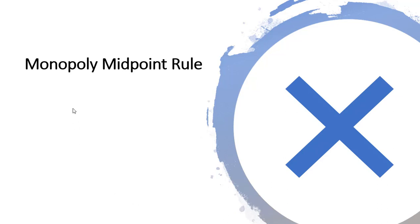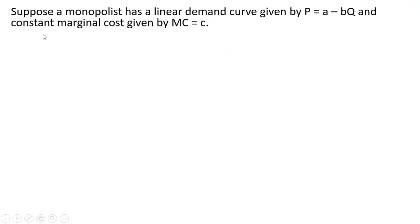Hello. In this video, we're going to review the Monopoly Midpoint Rule. Suppose a monopolist has a linear demand curve given by P = a - bQ and constant marginal cost given by MC = c.